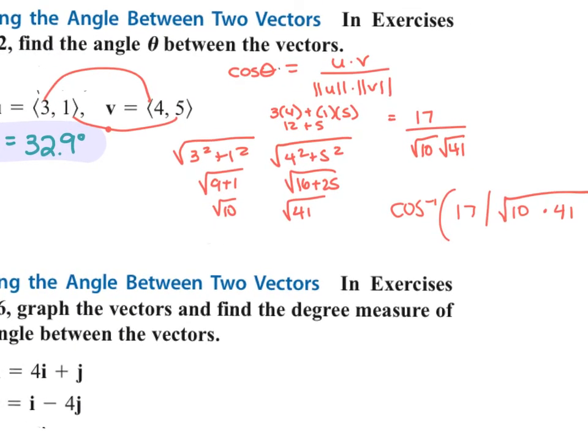It will tell you what to round to on your test. Watch how your square root is grouped, because it might be doing 17 divided by 10, then if you stop the square root it takes that, multiplies by 41, and then tries to find the cosine inverse of a number bigger than 1, which you can't do. So make sure both values are underneath your square root.